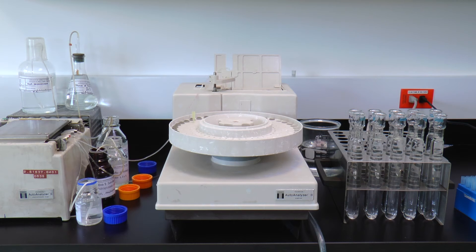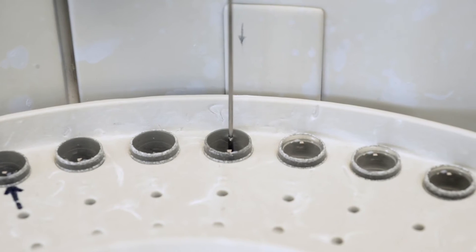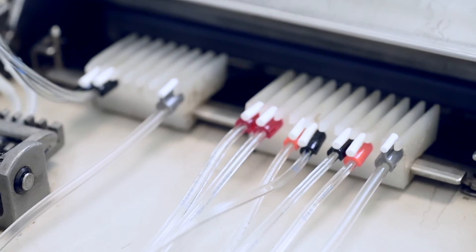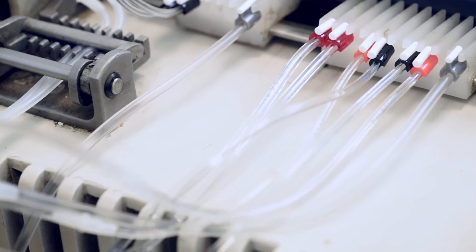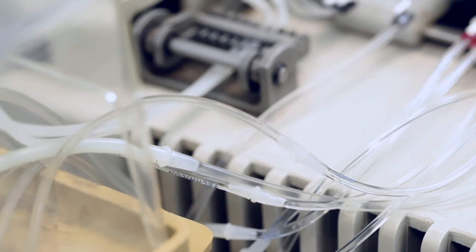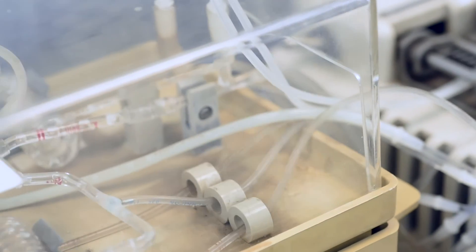The sample is placed in the sampler, where it is injected into the equipment through an absorption needle and a peristaltic pump that carries the sample and the reagents to the collector. Here the mixture is prepared for the colorimetric reaction.